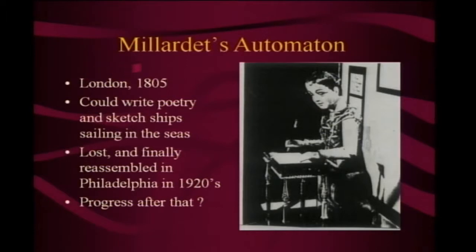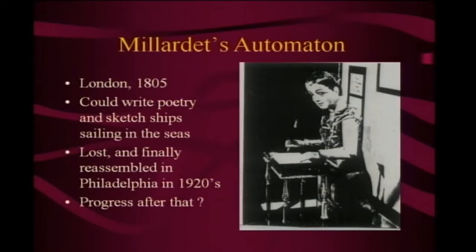In 1805, in London, they had a great technological exhibition in which Maillardet's automaton was displayed. It could write poetry — when you gave it a sheet of paper, it would write poetry. And it would sketch ships: press a different button, and it would sketch a ship sailing in the seas and things like that. So we are looking at 200 years ago.